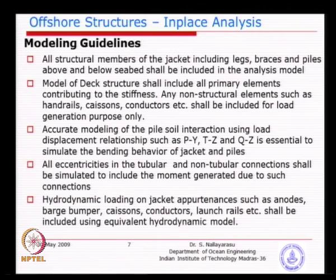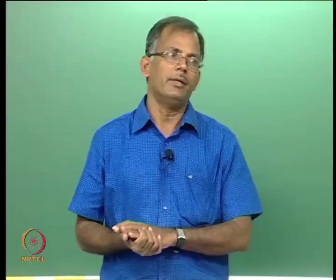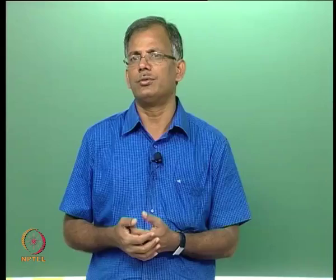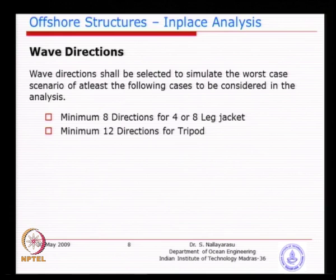Hydrodynamic loading on all secondary appurtenances also needs consideration. For example, cathodic protection anodes attached to the jacket attract wave loads but do not contribute to structural stiffness. These elements attract loads but will not give additional strength. So you must be careful: you attract the loads, but the stiffness is not contributed by them. You should differentiate between elements contributing to load effects versus those contributing to structural strength, and simulate accordingly.